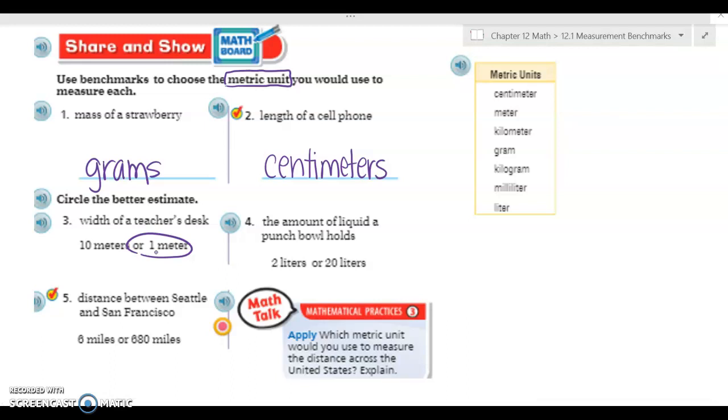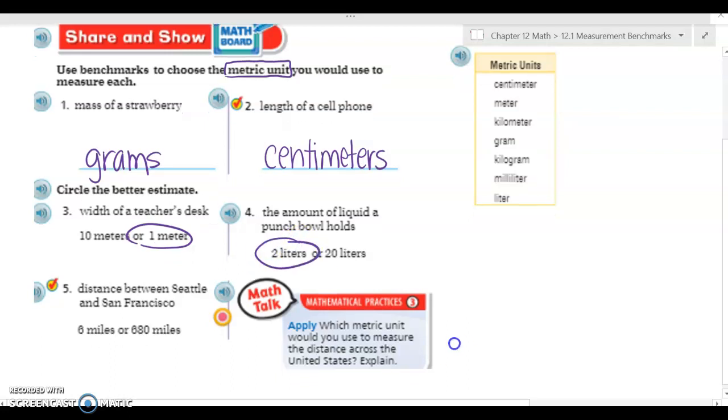Number four, the amount of liquid a punch bowl holds. So is it going to be two liters or twenty liters? Well I remember that two liter bottle of soda, so I'm thinking about a large punch bowl. It's probably going to hold two liters, not twenty.